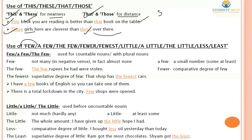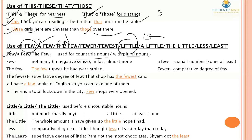Use of the 'few' family and 'little' family. The family of 'few' — few, a few, the few, fewer, fewest — is used before countable nouns with plural nouns. 'Few' has a negative sense meaning almost none — the thing exists but in negligible number. 'A few' means some at least — you have the thing in a small number. For example: 'There is a total lockdown in the city. Few shops were opened' — here 'few' implies almost none.